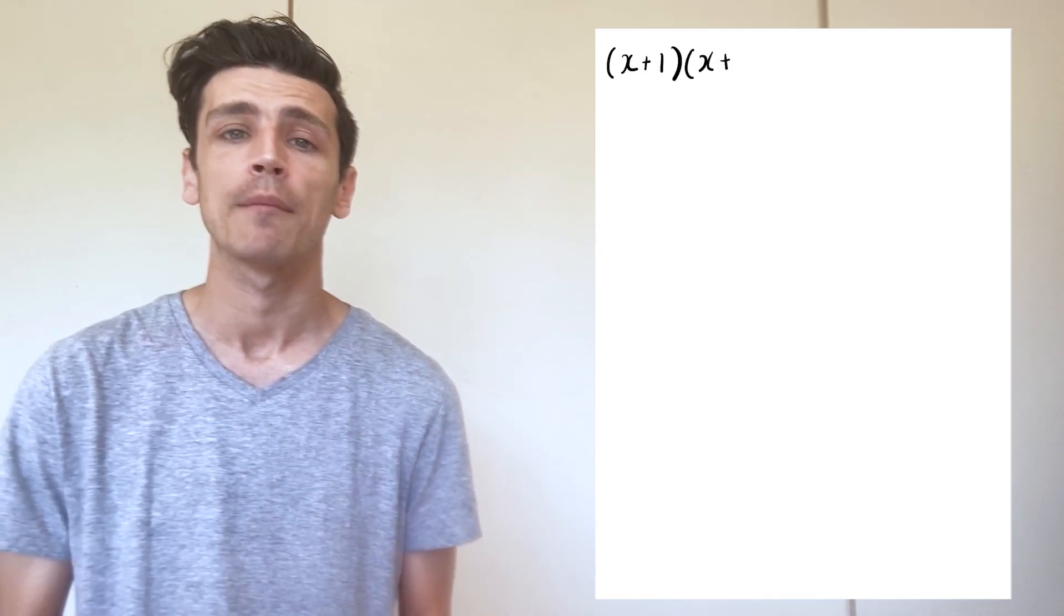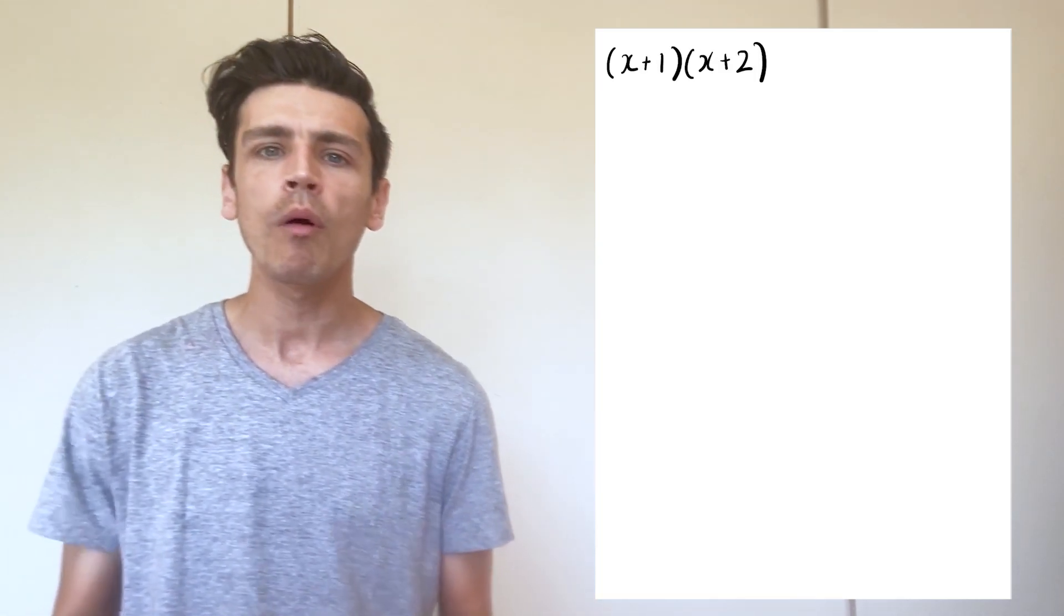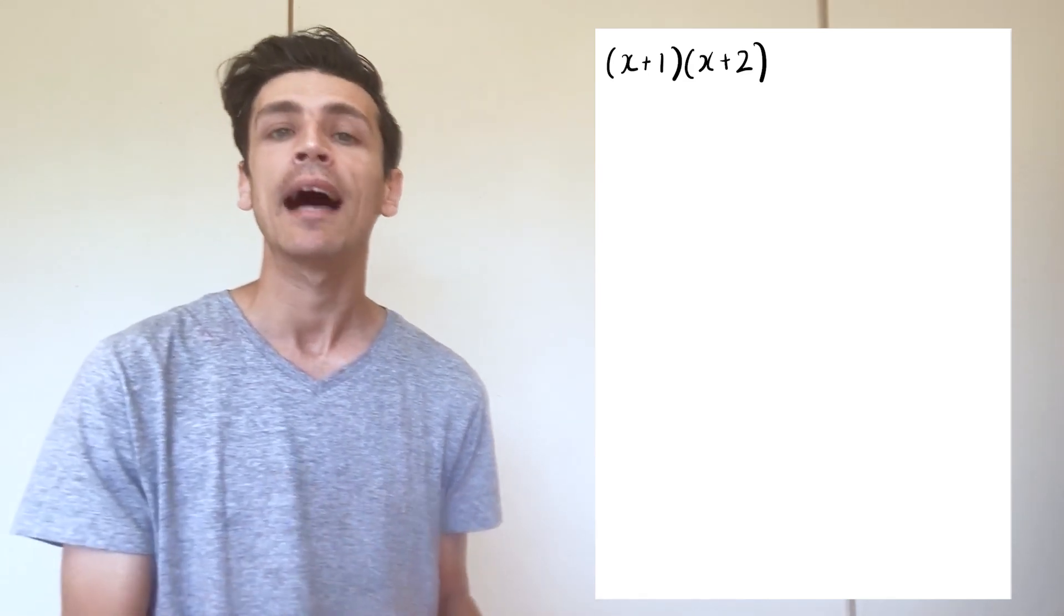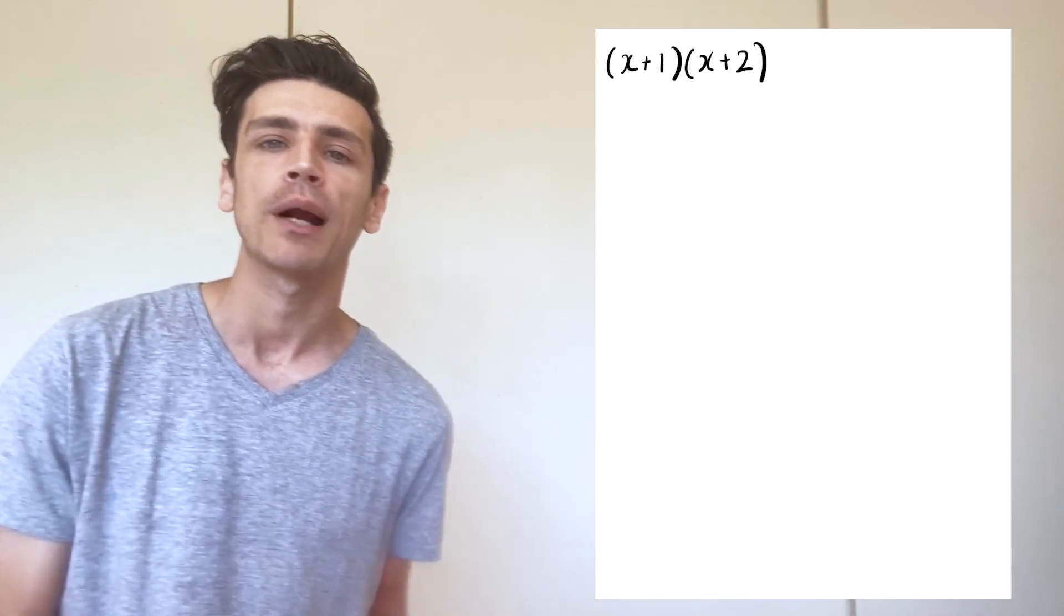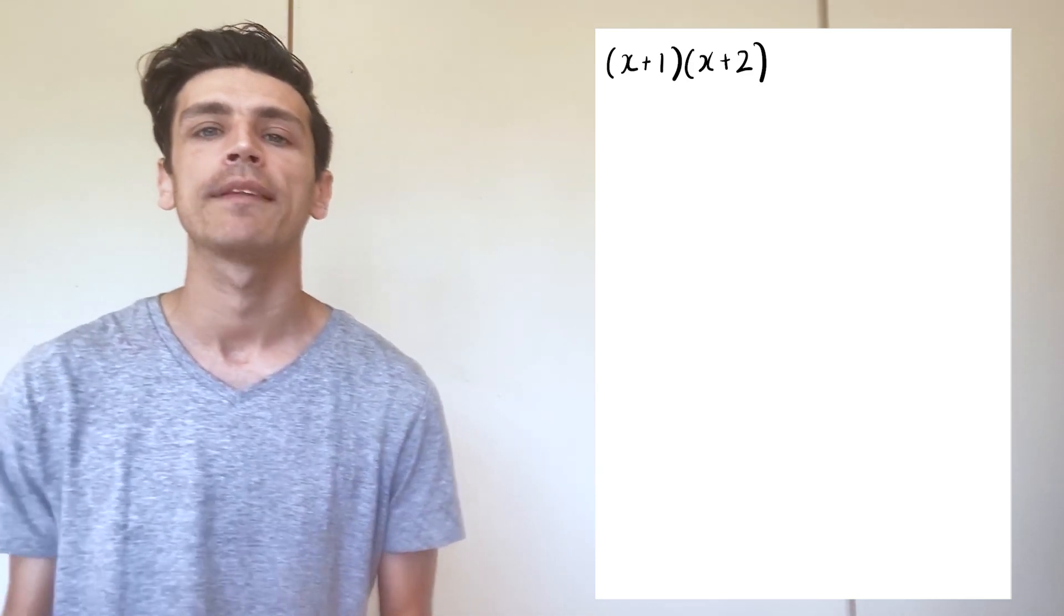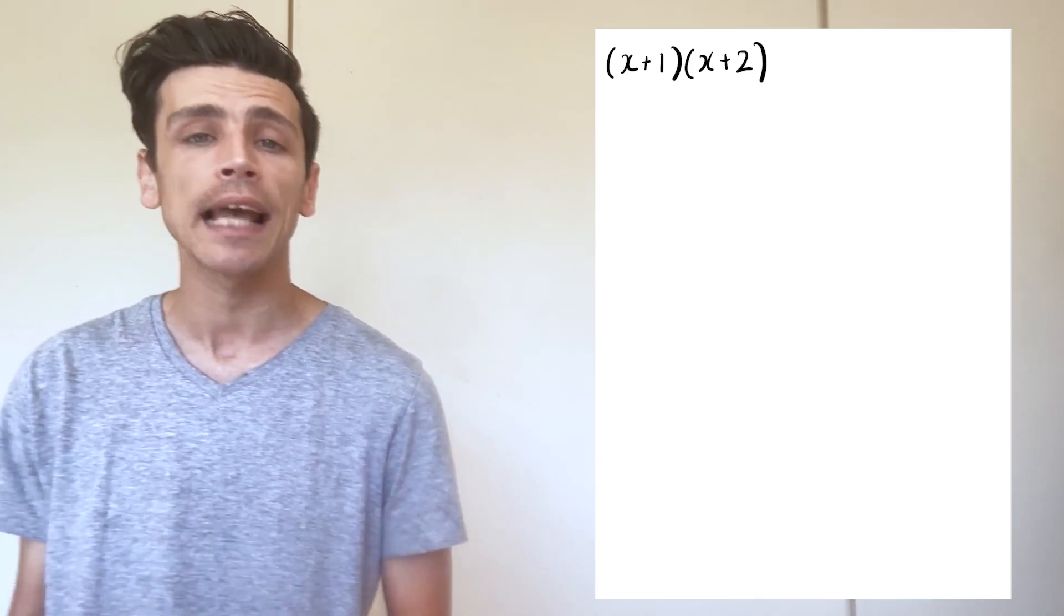A quick recap on distributive law: if we have two brackets, let's say the bracket of x plus one multiplied by the bracket of x plus two, what we do is we simply take our individual components of our first bracket and we multiply them by the individual components of the second bracket.